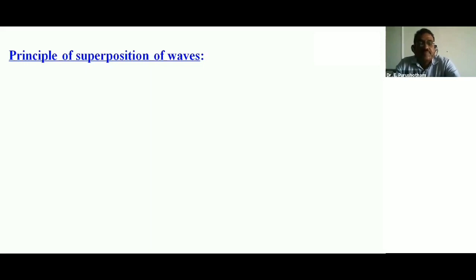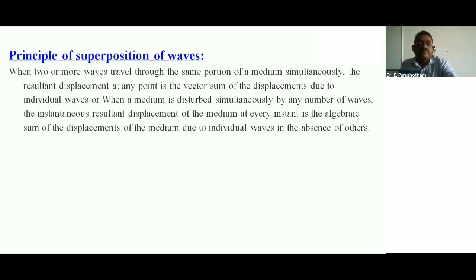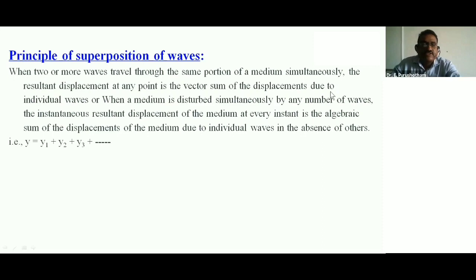When two or more waves travel through the same portion of a medium simultaneously, the resultant displacement at any point is the vector sum of the displacement due to individual waves — this is called the principle of superposition. So the resultant R equals y1 plus y2 plus y3 and so on.